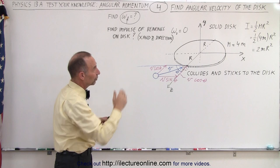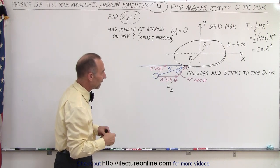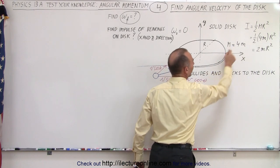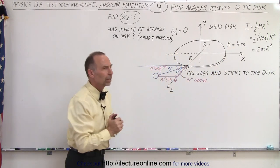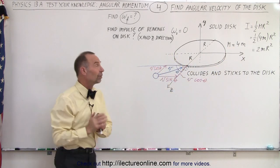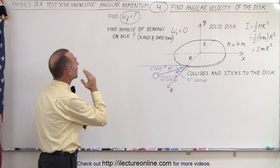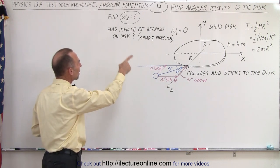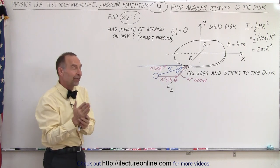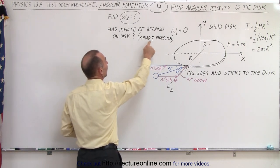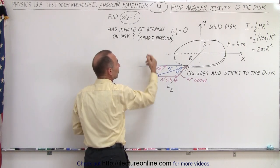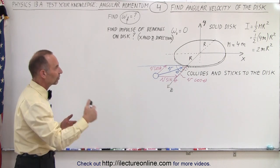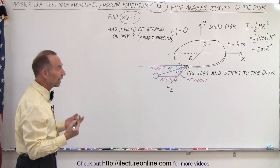We still have the moment of inertia of the solid disk being one-half times the mass times the radius squared, where the mass of the disk is four times small m. We're still trying to find the final omega — the final angular velocity of the disk — and the impulse of the bearings on the disk, but now we need to find the component in the x-direction and in the z-direction to find the total impulse of the bearings onto the disk.